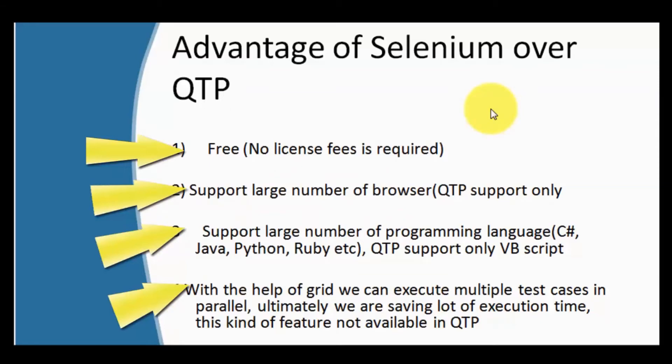If we execute all test cases in sequence it takes 100 minutes — QTP executes all test cases in sequence. But in Selenium we can execute multiple test cases in parallel, either on a single system or multiple systems. For example, executing 4 test cases in parallel means 100 test cases will take only 25 minutes. That is the biggest advantage of Selenium over QTP.